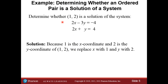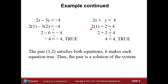In this case, we want to determine whether (1, 2) is a solution of the system. We plug in 1 and 2 into both equations and see if we get a true statement in both cases. Plugging in gives us 2 minus 6 equals negative 4, which is true. In the second equation, 1 times 2 is 2, plus 2 equals 4, so we get 4 equals 4, also a true statement. This proves that (1, 2) is indeed a solution of the system.